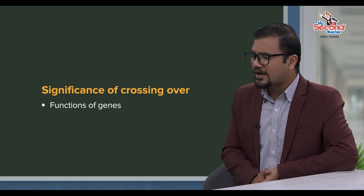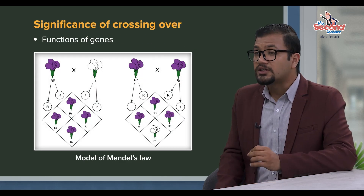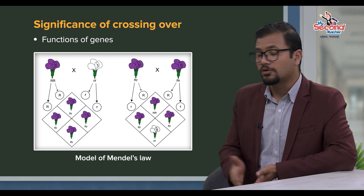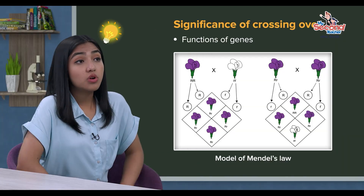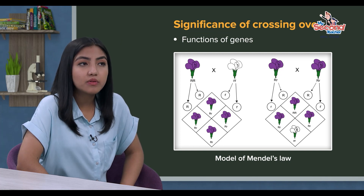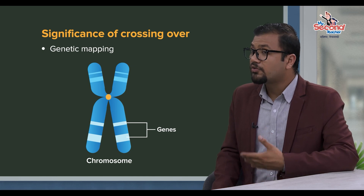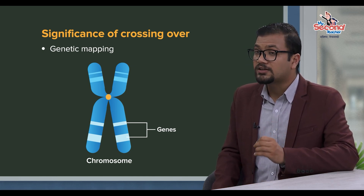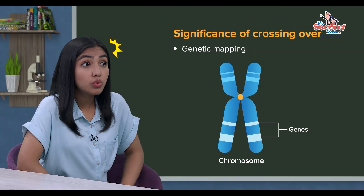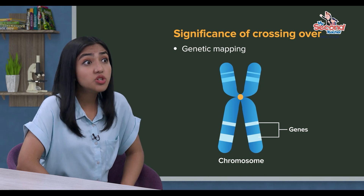Crossing over means that genes can be found in a function. Which gene is dominant or which gene is recessive can be found through study by crossing over. So crossing over means genes can be found in their function and properties. Crossing over means genetic mapping, and that chromosomes means genes can be found in a location — that's genetic mapping.